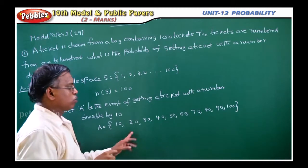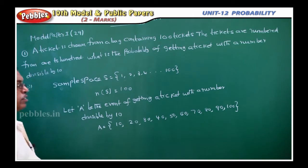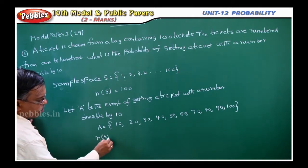So, you count here 1, 2, 3, 4, 5, 6, 7, 8, 9, 10. Totally how many events are there? 10. So, N of A is equal to 10.